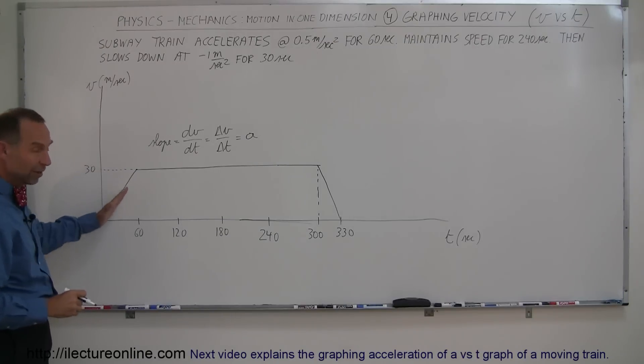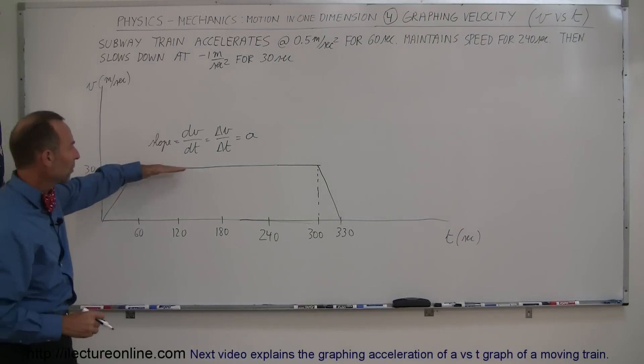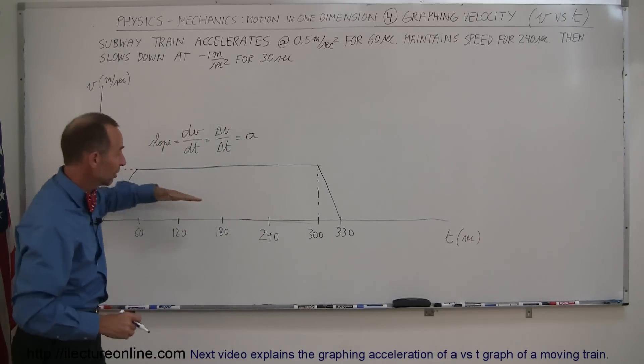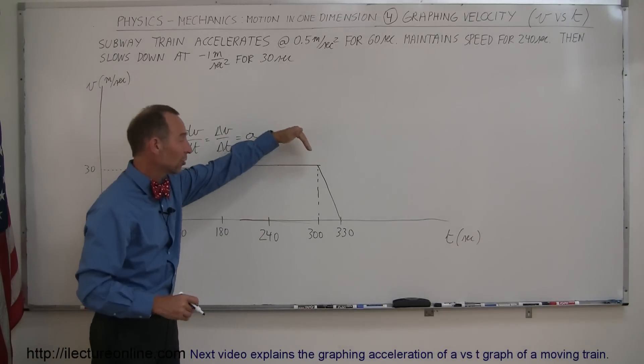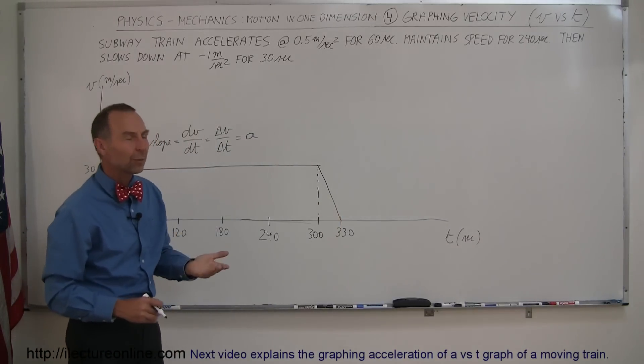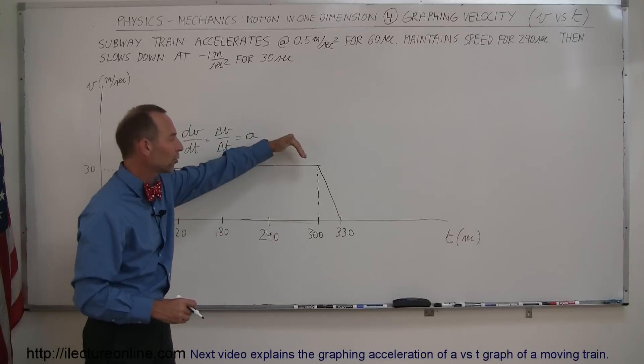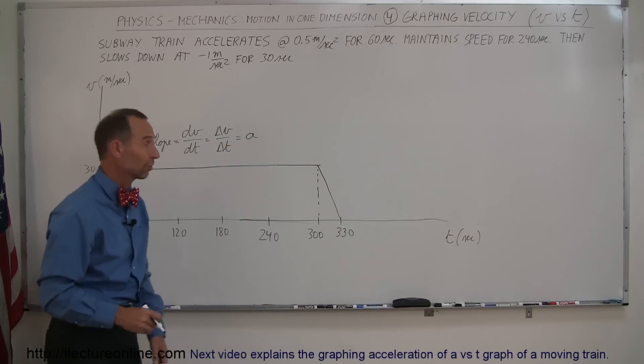Here the slope is positive, positive acceleration, half a meter per second squared. Here the slope is zero, zero acceleration maintains constant speed. Here the slope is negative, it's decelerating or negative acceleration at minus 1 meter per second squared for the next 30 seconds.